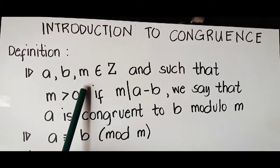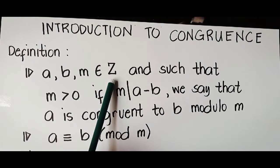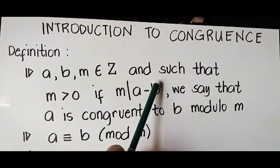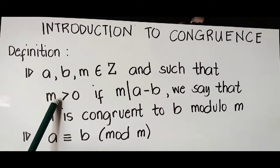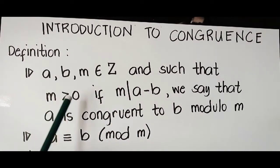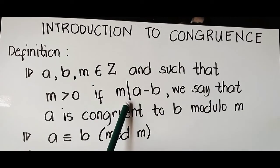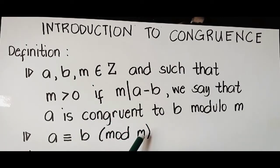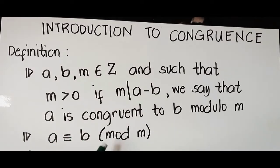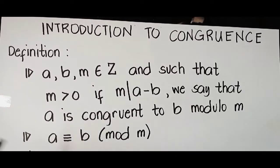If a, b, and m are elements of integer numbers such that m is greater than 0, if m divides a minus b, we say that a is congruent to b modulo m. And we can write a congruence to b modulo m.